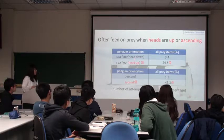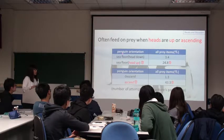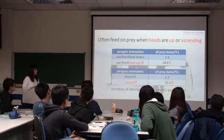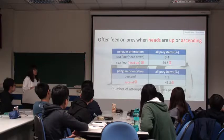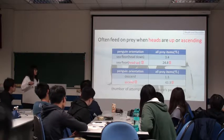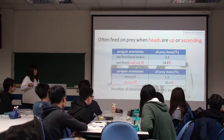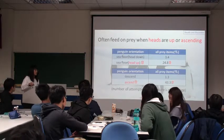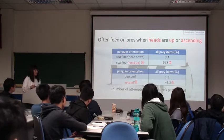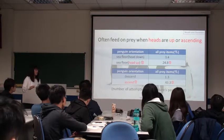Please take a look at this chart. The penguin is at depth with its head down or with its head up, and this is the number of the attempted prey capture percentage. We can note that the head-up percentage is higher than head-down. In the bottom chart, descending means going down and ascending means going up, and the ascending prey capture percentage is higher than descending. So the penguin often feeds on prey when its head is up or when it is ascending.